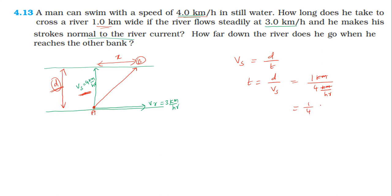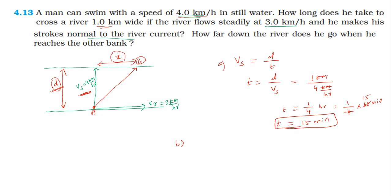Time taken to cross the river equals 1 divided by 4 hours. Since 1 hour equals 60 minutes, the time taken to cross the river is 15 minutes. Now we need to find how much distance is dragged by the river during this crossing time of 1/4 hour.